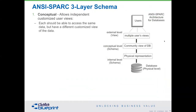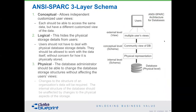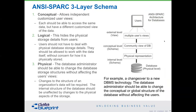The ANSI Spark three-layer schema is a good conceptual way to think about the types of data models that make up an architecture. First, conceptual — allowing independent customized views. Second, logical — which hides the details of physical storage from users but gives them things in their natural form. And finally, physical — the way the database stores things in its most efficient fashion. This is where normalization can give you impressive results. Most models are at the physical or logical level. Conceptual is something more rarely encountered in the world.